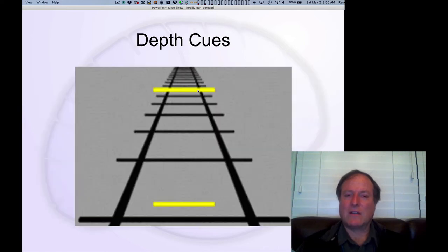Classic train track version of these depth cues, parallel lines receding in depth. Therefore, this line here seems much wider, much longer than this line. In fact, they're exactly the same length.